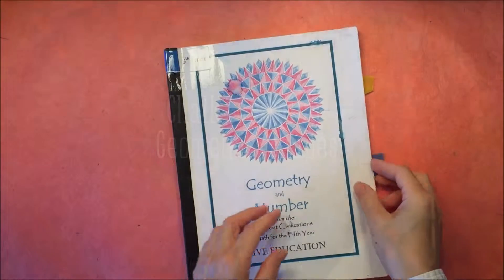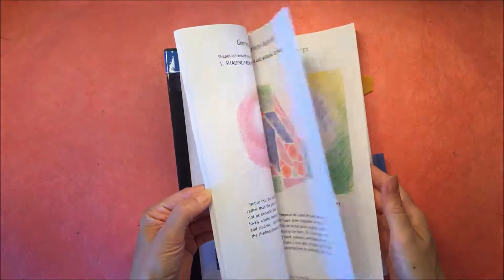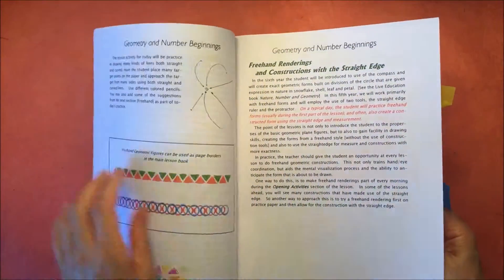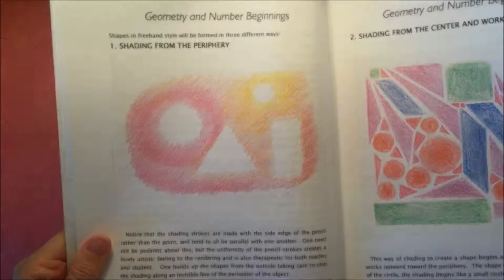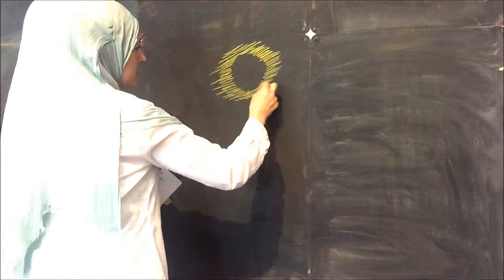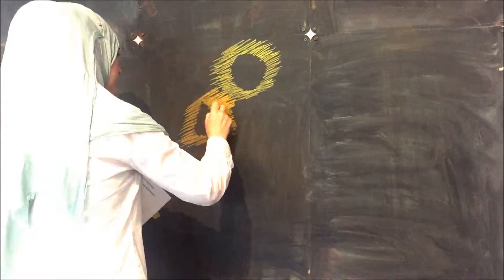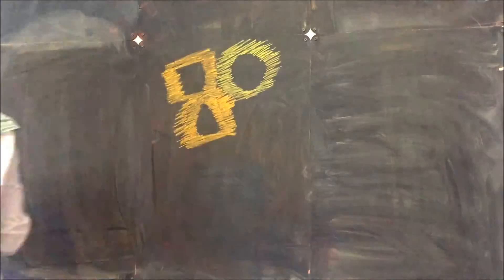Hello, I have a chalk drawing for you today. As part of our geometry unit we're going to be doing some geometric shapes and we're using a Waldorf curriculum from LiveEducation.com. We're working on our very first lesson for this unit and we begin by shading shapes from the periphery.